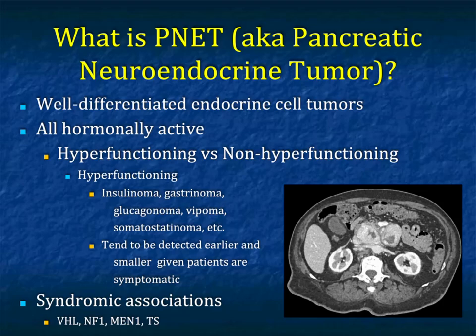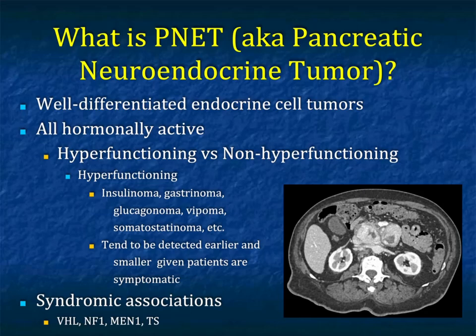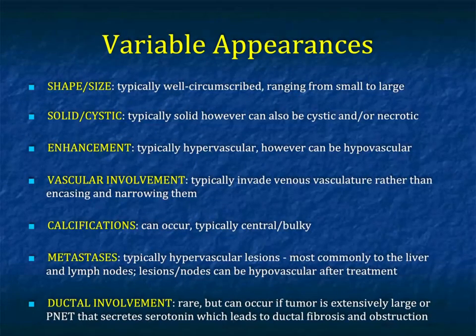The functioning ones tend to be detected earlier and smaller when patients are symptomatic. We do have syndromic associations with Von Hippel-Lindau, neurofibromatosis type 1, MEN1, and tuberous sclerosis. This image shows a large vascular mass in the head of the pancreas and a large secondary nodal component to the left of midline.